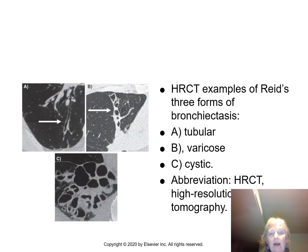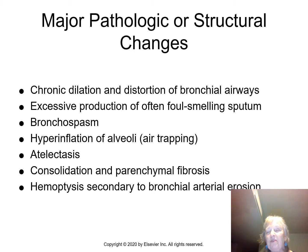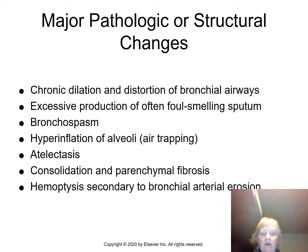X-rays illustrate these forms: A shows tubular, B shows varicose, and C shows cystic bronchiectasis. The major pathological and structural changes include chronic dilation and distortion, excessive foul-smelling sputum, bronchospasm, and hyperinflation with air trapping — which is why this is an obstructive disease. It also leads to atelectasis, consolidation, fibrosis in the outer airways, and hemoptysis secondary to arterial erosion.